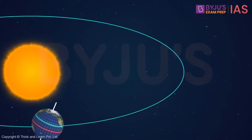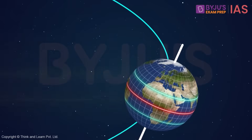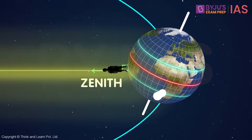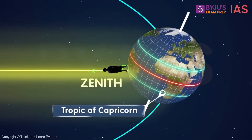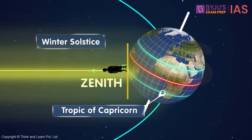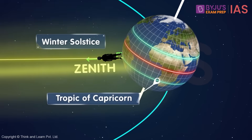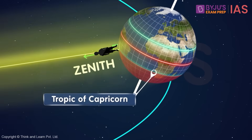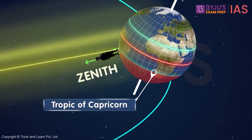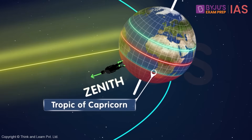As the sun moves towards the south, its direct rays can be experienced only till the Tropic of Capricorn in the southern hemisphere. When the sun is directly overhead at the Tropic of Capricorn, it is called the winter solstice. After this point, the sun starts moving towards the north. So, if you are someone living to the south of the Tropic of Capricorn, you will never see the sun directly overhead — it will always appear to the north of the zenith.